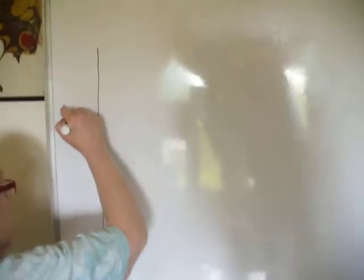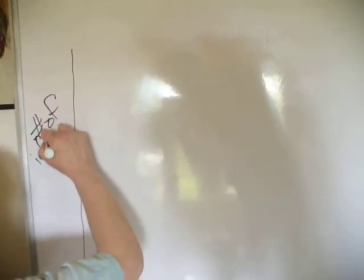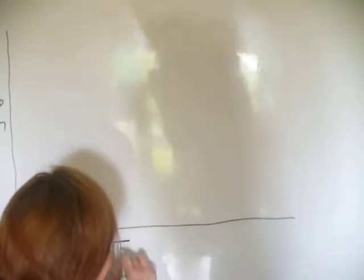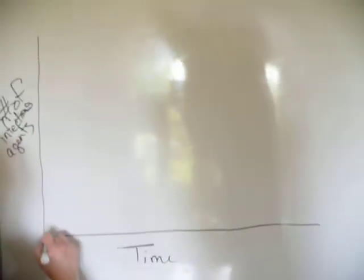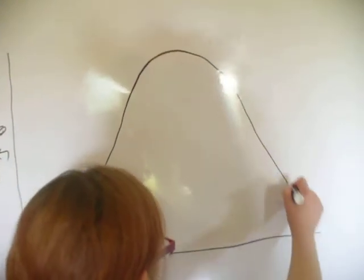Now I want to show you another graph. This is for your new notes — quiz three. This is graphing the progress of a disease. We have the number of infectious agents on one axis, still time on the other, and we're going to have something that looks like a bell-shaped curve.